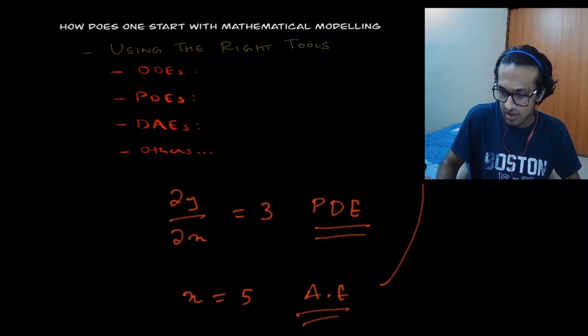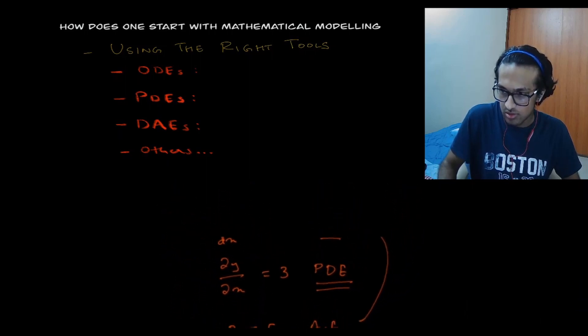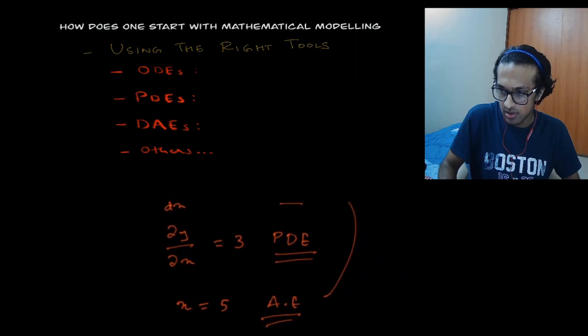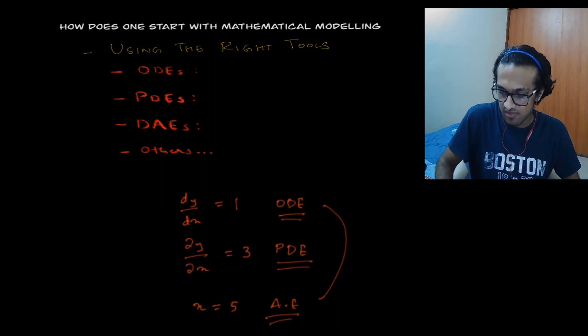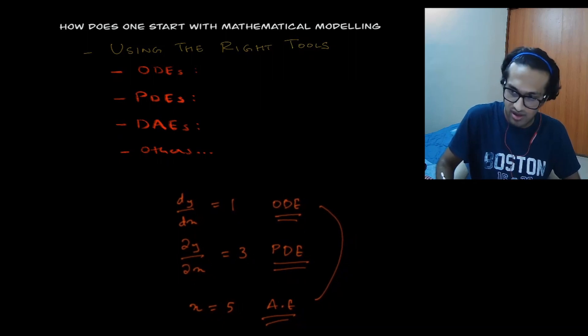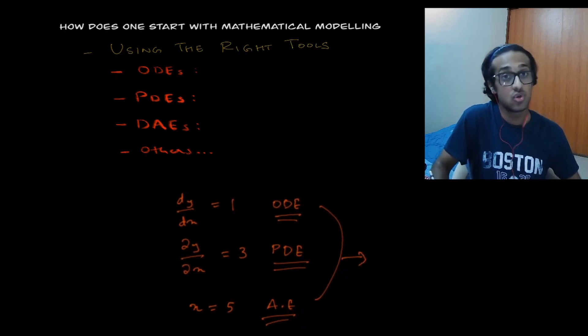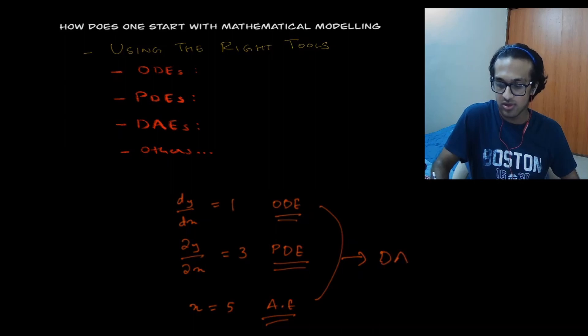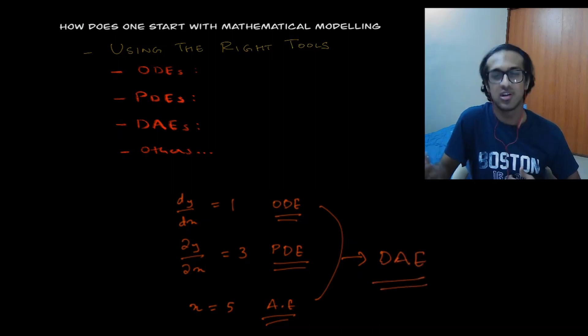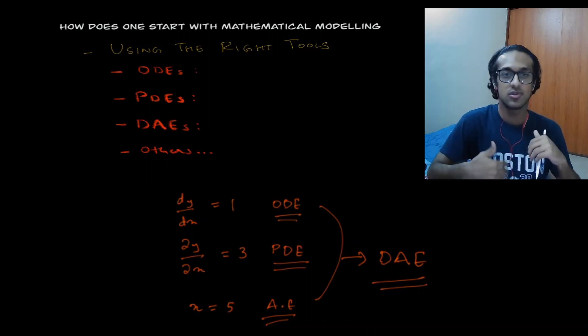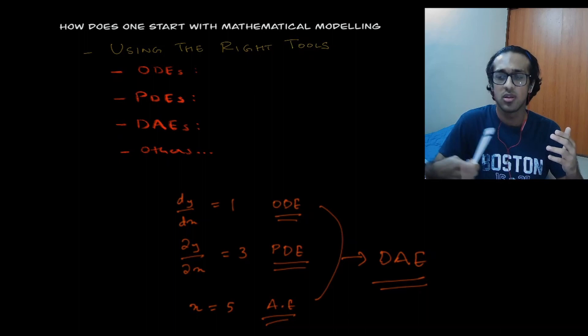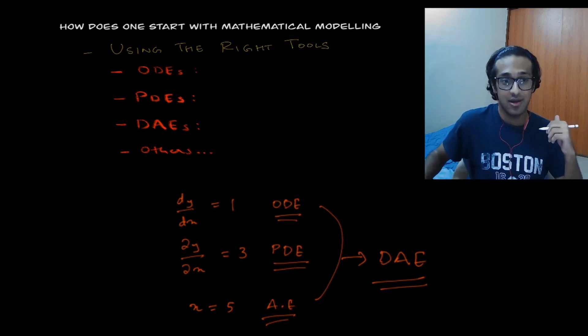So I have an algebraic equation. So just to show you better. So I had a differential equation, I have an ordinary differential equation, I have a partial differential equation. And now I have an algebraic equation. And these two together, in fact, give rise to what is called a DAE, which is a differential and algebraic equation. So these are just some tools we use in modeling things. There are a bunch of other tools, which we will talk about in the future lectures, but it's always right to pick the right tools in modeling.